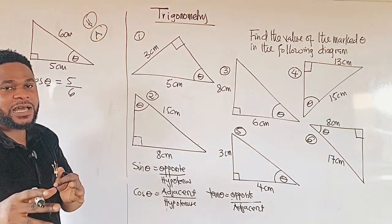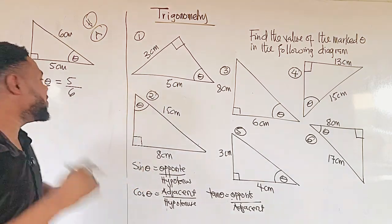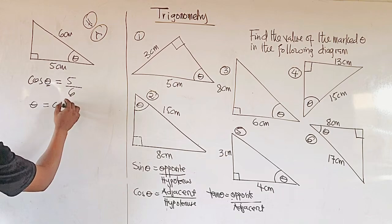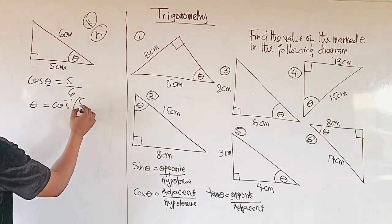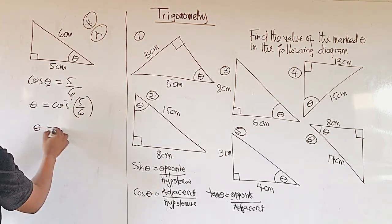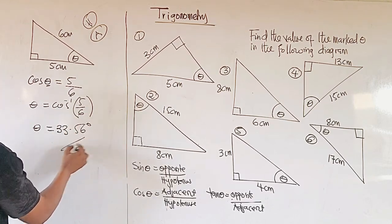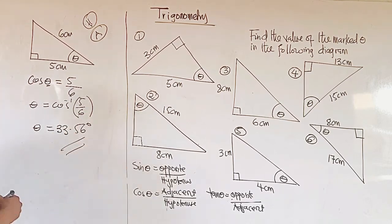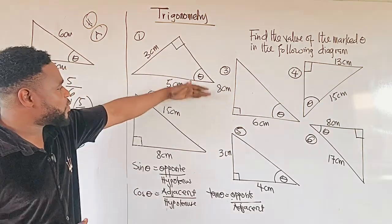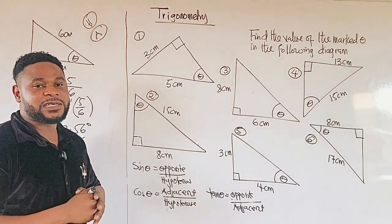If it is tan, we find tan inverse. If it is sin, we find sin inverse. So theta equals cosine inverse of 5 divided by 6, and our theta will be equal to 33.56 degrees. Use the same approach to answer these ones and leave your answer in the comment section. Thank you.